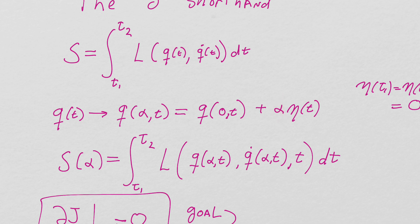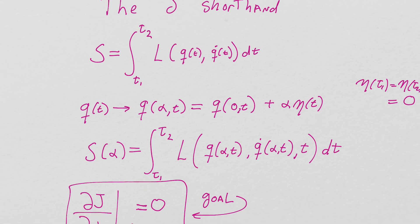So we set alpha to equal zero and we end up with just q of t. If alpha is not equal zero, we have some variation from the path that we expect. And this is how we formalize the notion of variation.